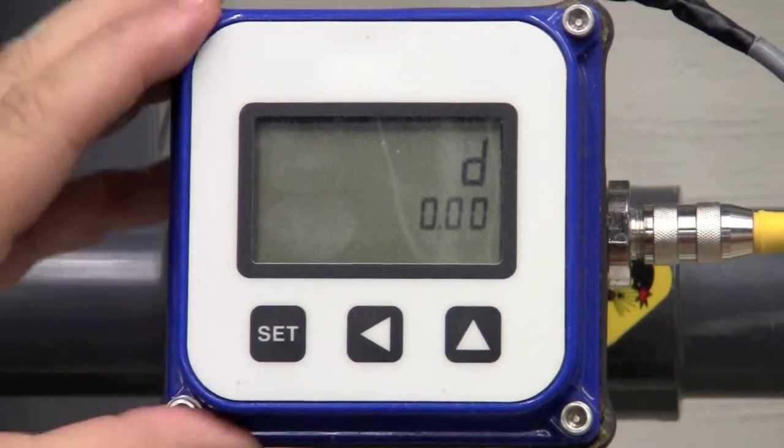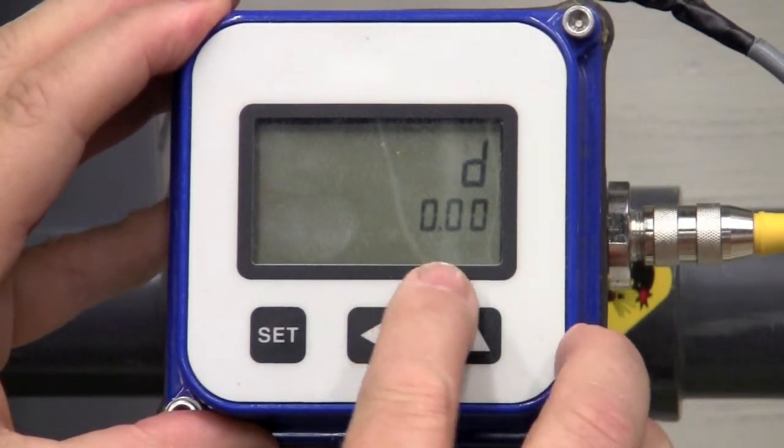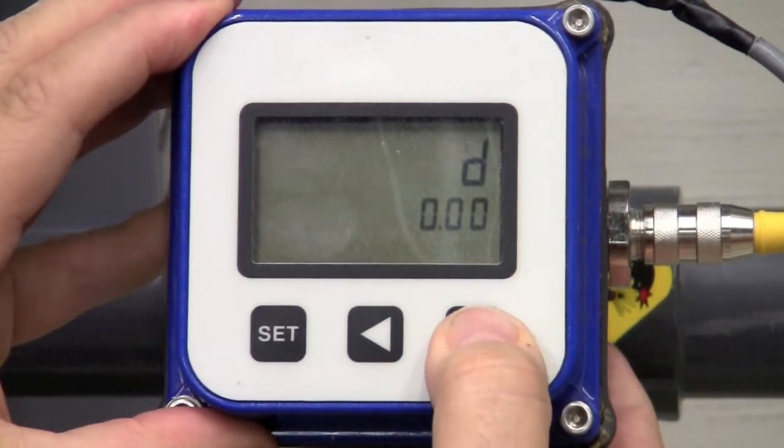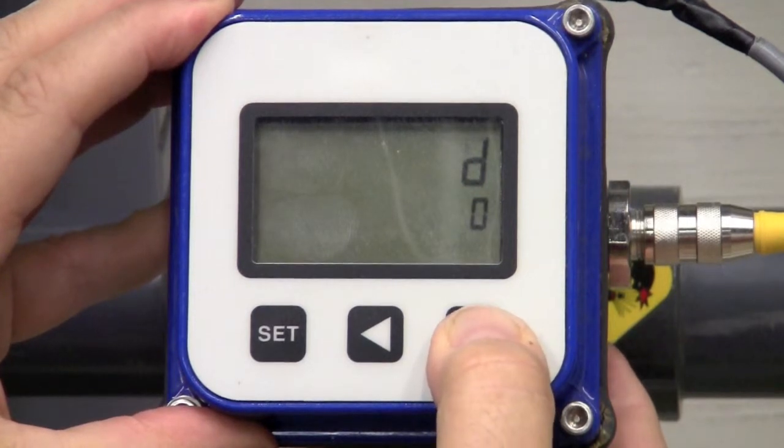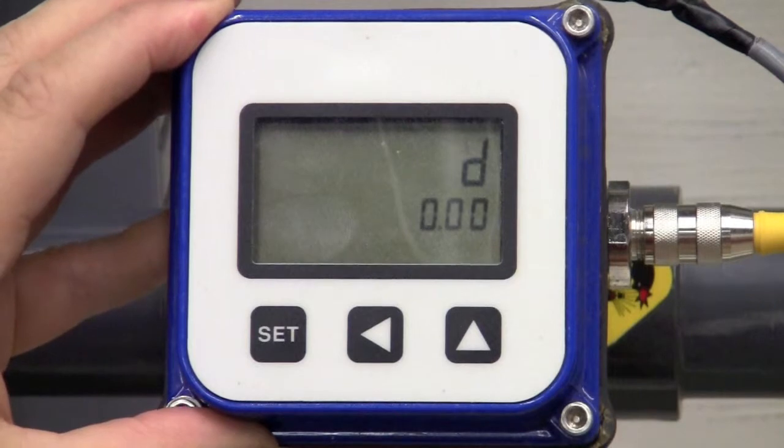Next parameter is your decimal point. Right now, I have 0.00. I can go no decimal points, one decimal point, or two decimal points. Very easy.